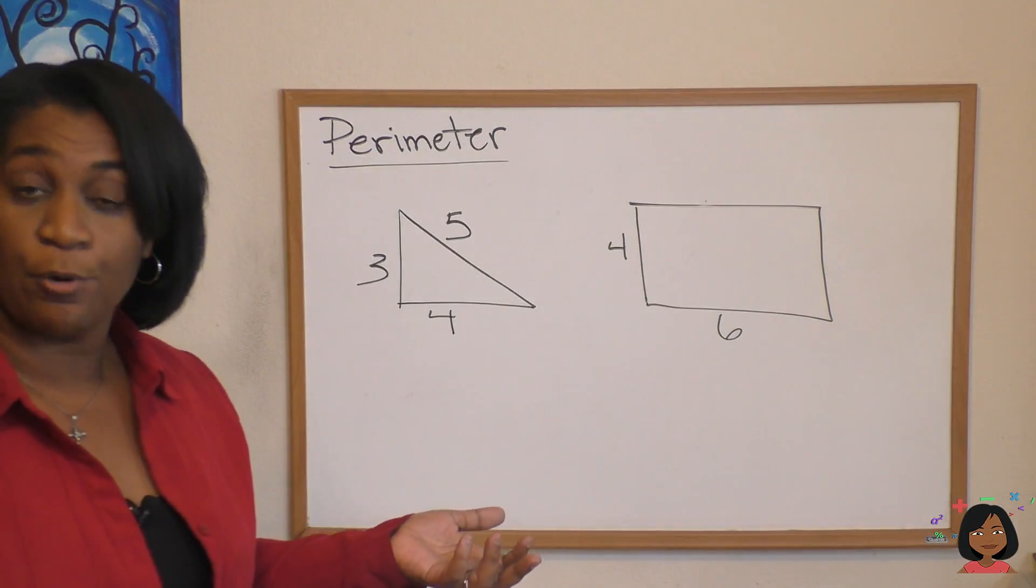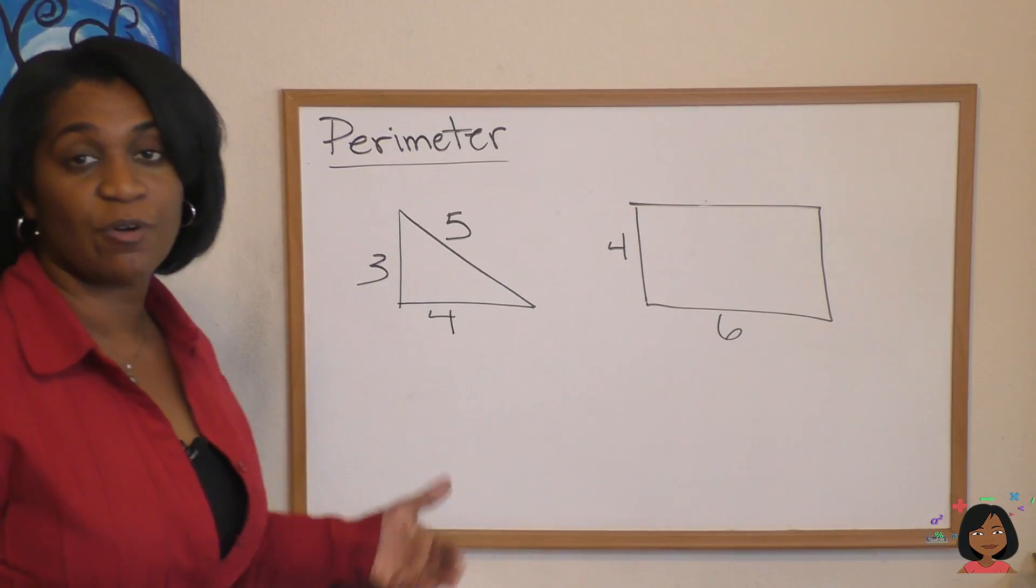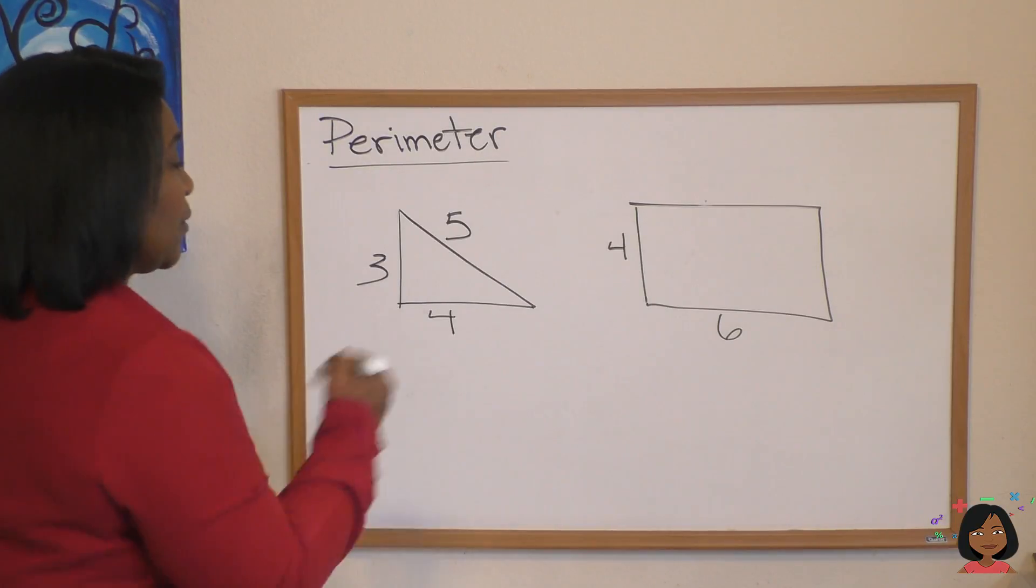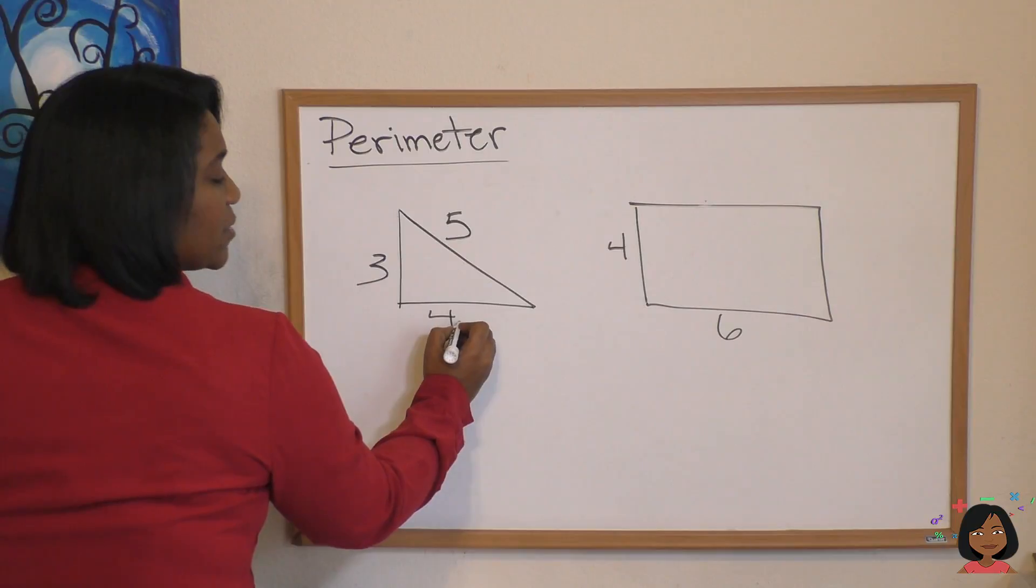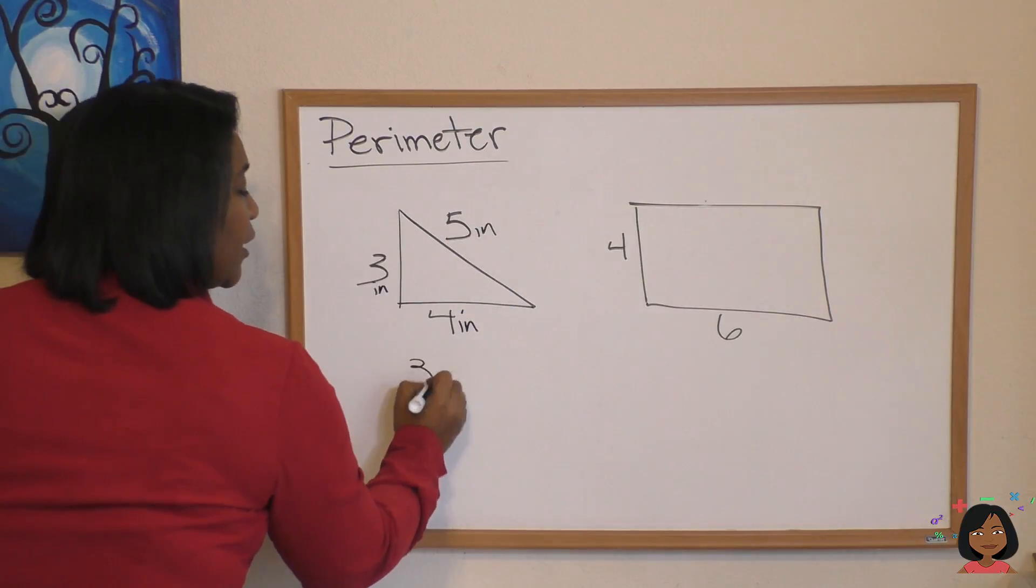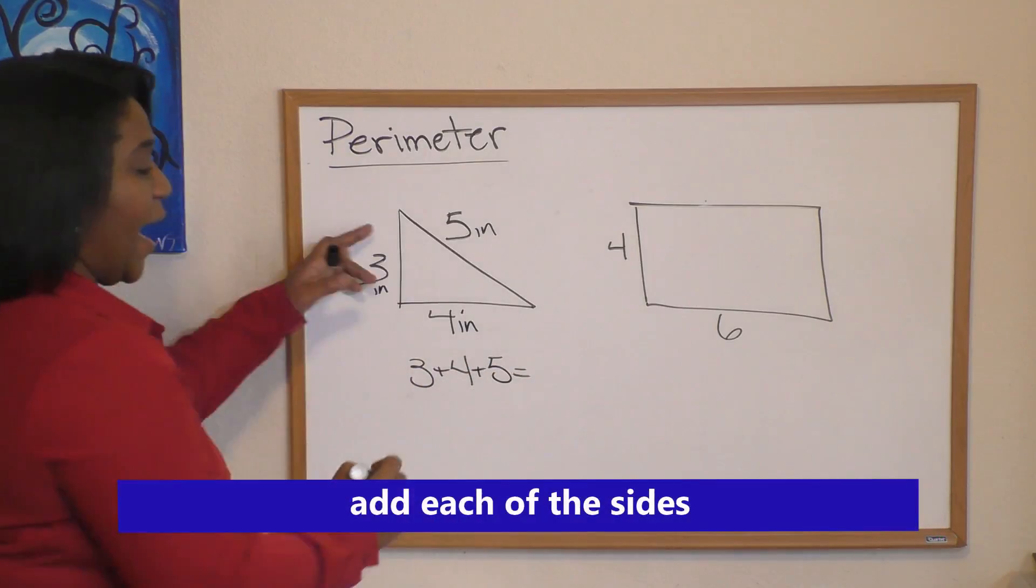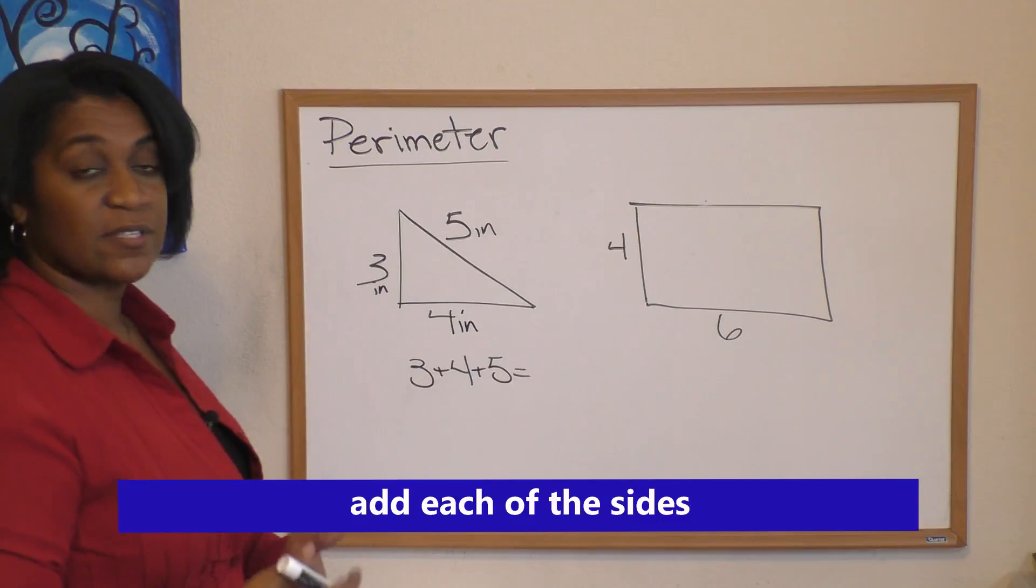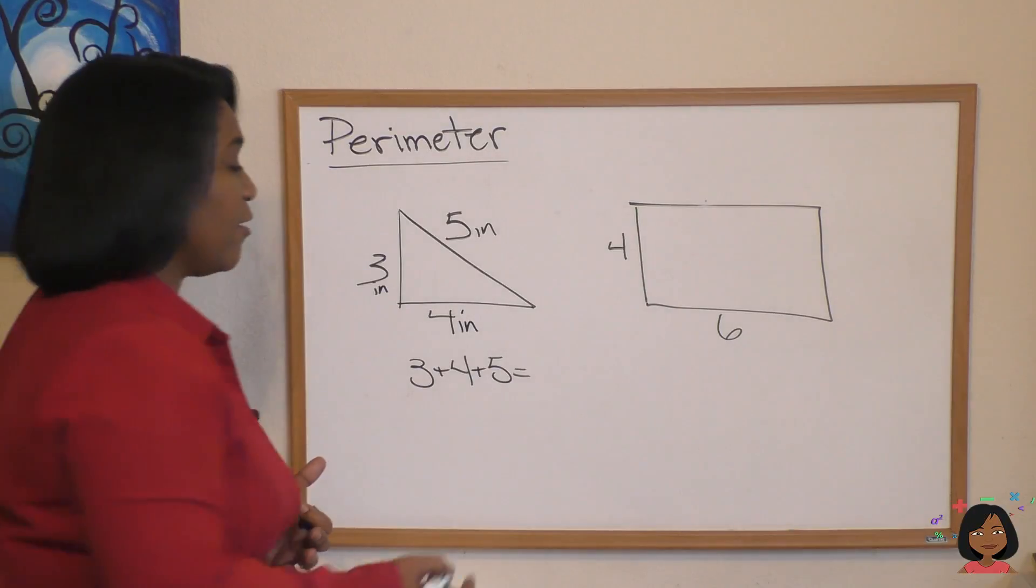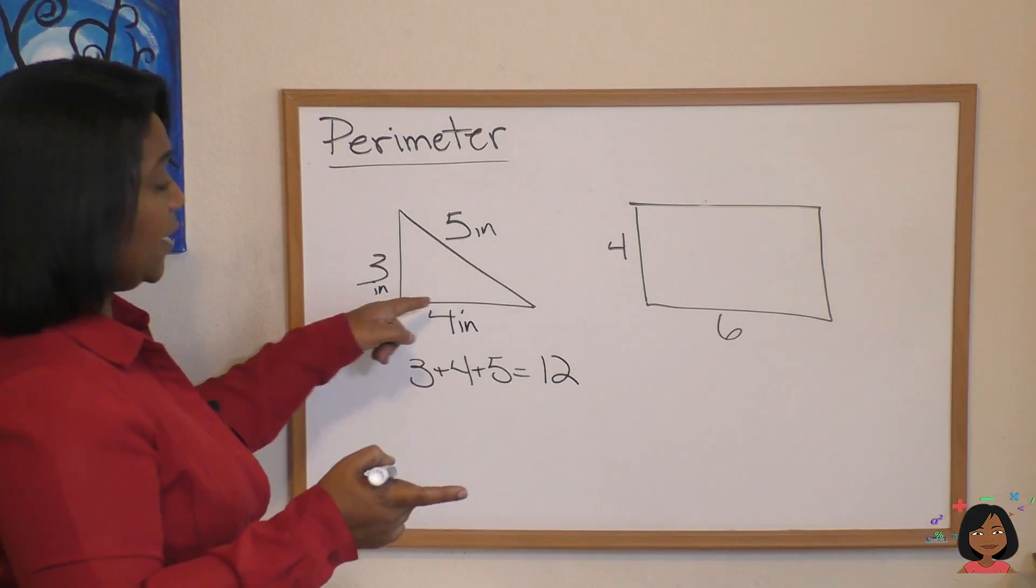But we can do the perimeter of shapes as well and all we have to do is add up the total of the sides, put a label on it, and that's the perimeter. So for example, we have a triangle here. The perimeter simply would be, let's say this was inches, we go 3 plus 4 plus 5. So I'm adding up each of the sides: 3 and 4 is 7, 7 plus 5 is 12, and it's not perimeter until you put a label on it: 12 inches.